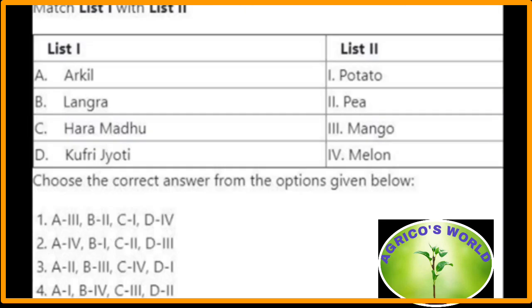Matching of list one with list two: Arkha is a variety of mango; Langura is a variety of pea; Kufri Jyoti is a variety of potato; Pusa Jyoti is a variety of melon. Here the right option is the first option.